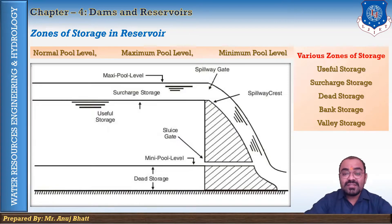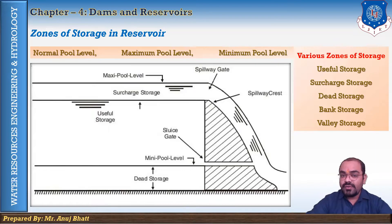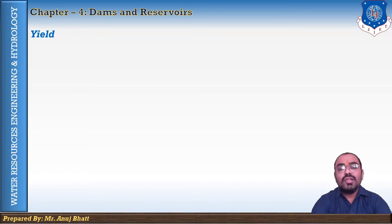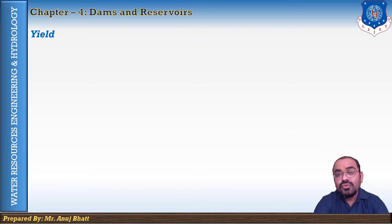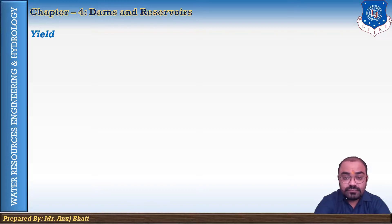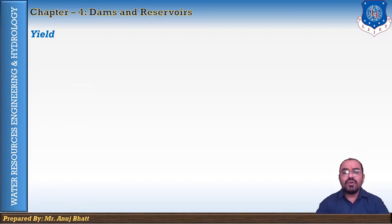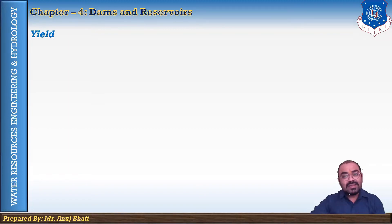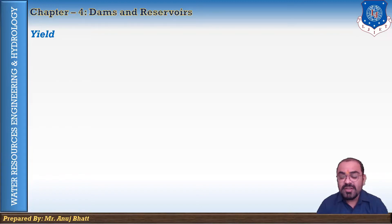These are the zones of storage in the reservoir. Now let's talk about the yield of a reservoir. A long-range runoff from a basin is known as the yield of that catchment or reservoir. Generally, a period of one year is considered for determining the yield value. The total yearly runoff expressed as the volume of water entering the outlet point of the basin is known as the catchment yield.